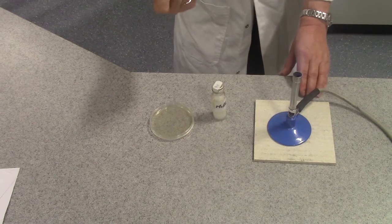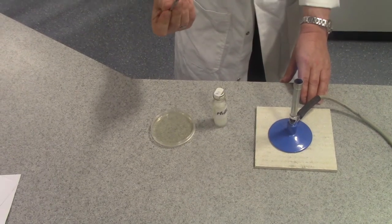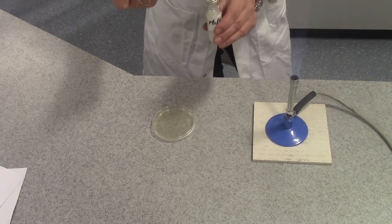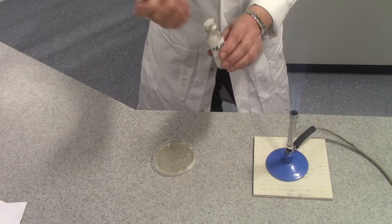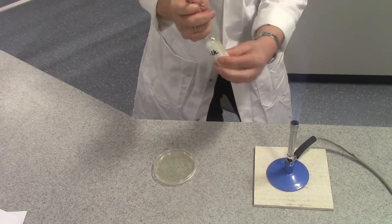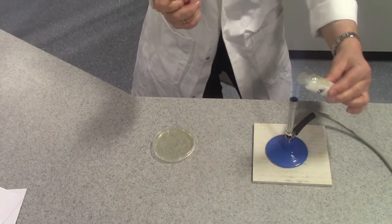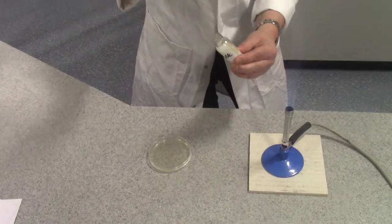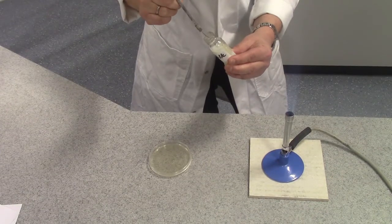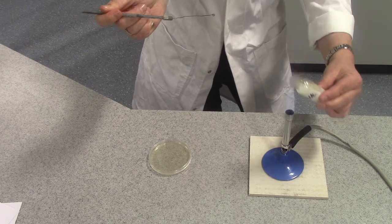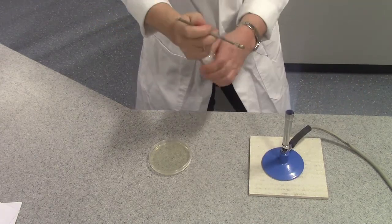Allow the wire loop to cool for a few seconds, and then we're going to take the sample of milk, carefully remove the lid, and pass the top of the glass bottle through the flame. We're then going to insert the loop just to take out a small sample of the milk, re-flame the top, and then put our lid back on.